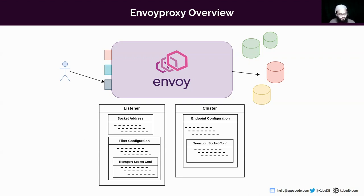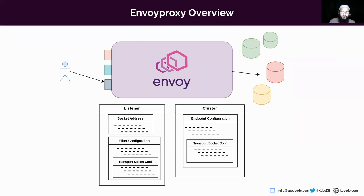The Postgres filter provides functionality based on the Postgres protocol. When establishing a Postgres server-client connection through these filters, you get statistics on how many connections have been processed, how many errors occurred, and you can generate metrics. Since the Postgres filter parses SQL queries, it can be customized to implement RBAC. As we are working on databases, Envoy proxy supports database-specific filters like MySQL filter, PostgreSQL filter, MongoDB filter, Kafka broker, and many more.